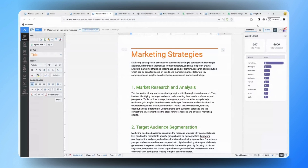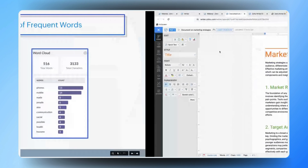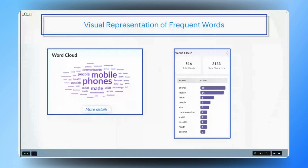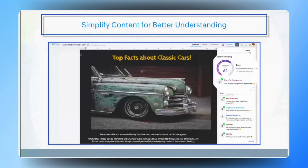That sounds fantastic. Having the ability to quickly spot and address repetitive words not only streamlines the content creation process but also saves valuable time. This feature is a huge advantage for marketing teams aiming to keep their content engaging and dynamic. Moreover, readability is essential in marketing to ensure that content resonates with a diverse audience. Gautam, how can Zoho Writer assist marketing teams in enhancing the readability of their content?